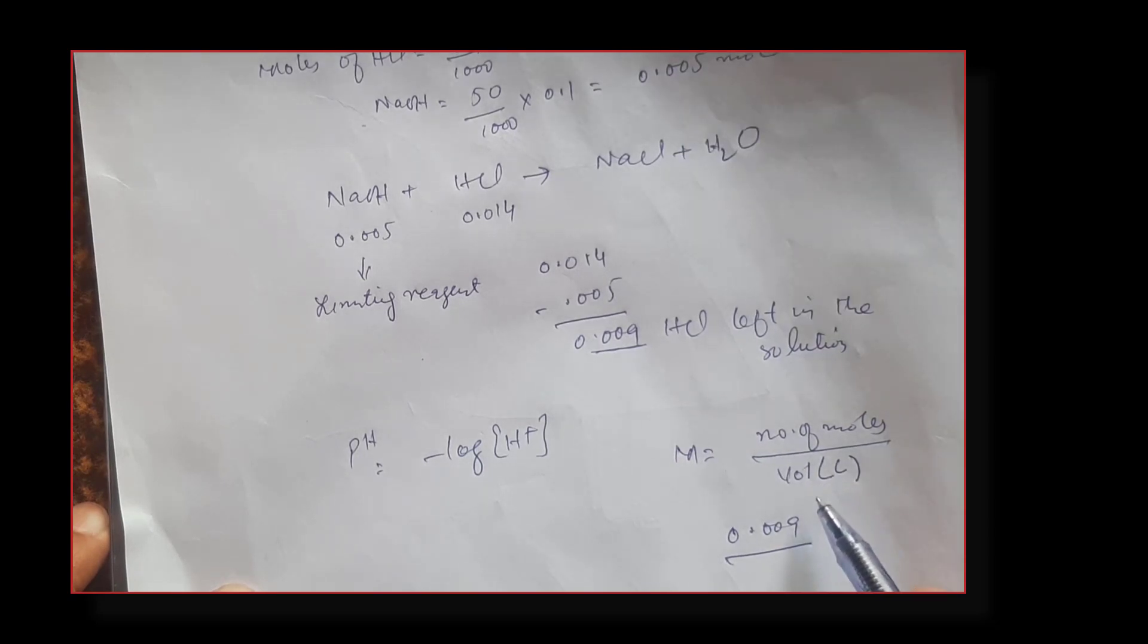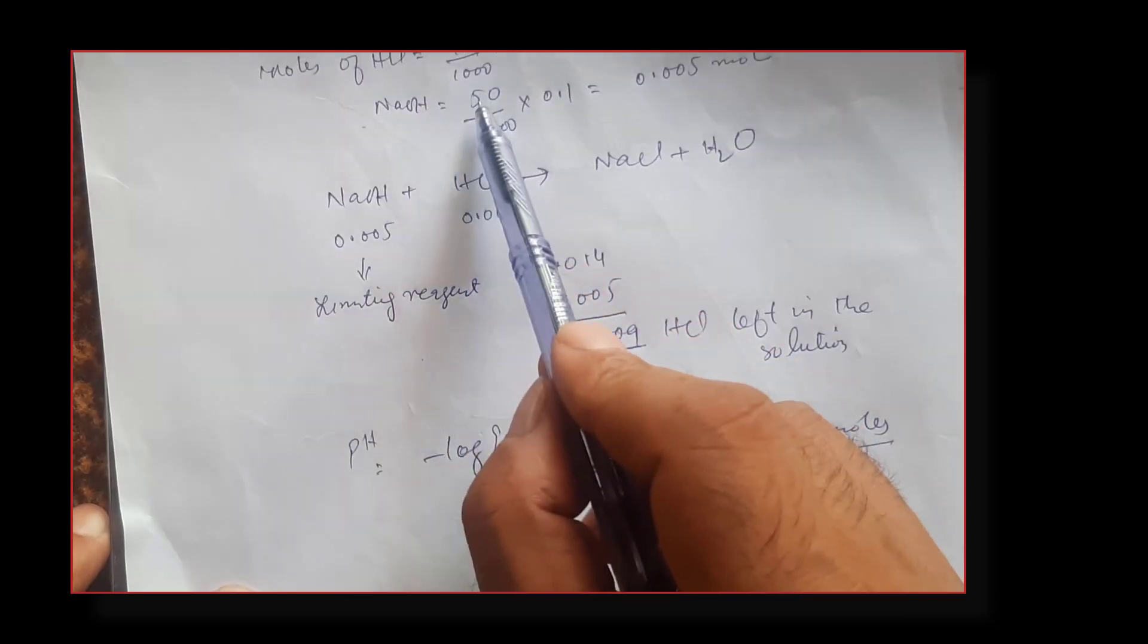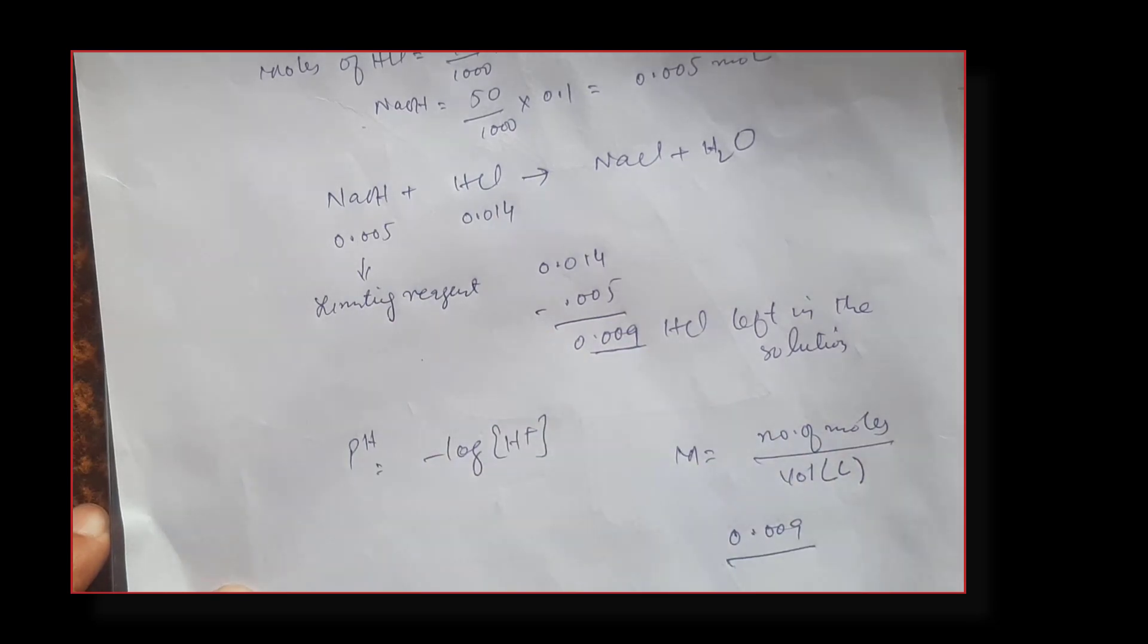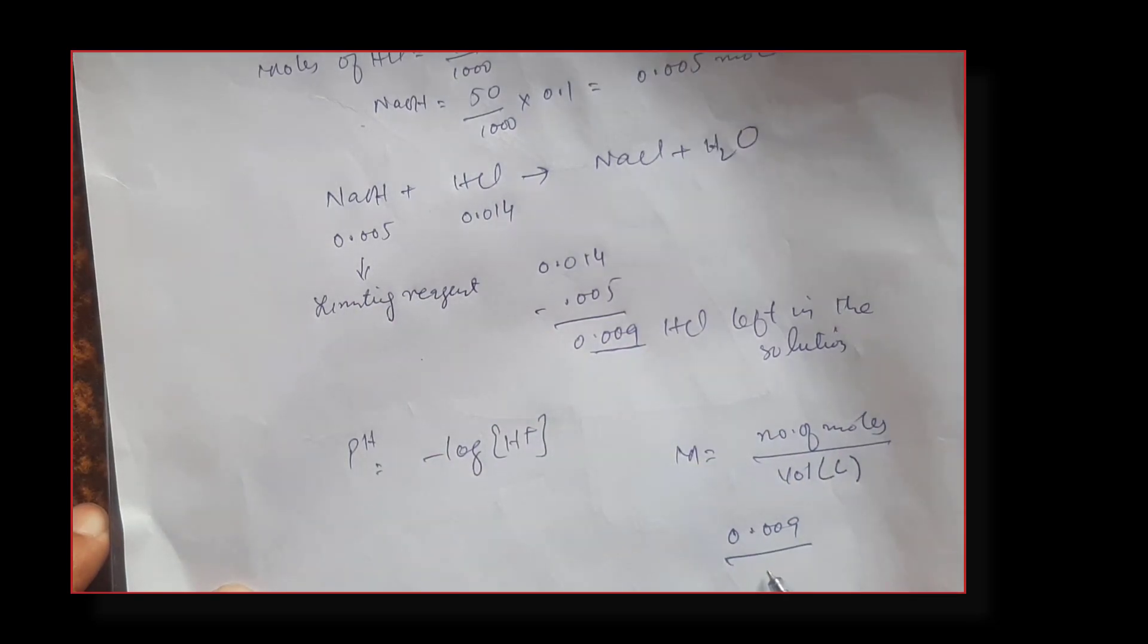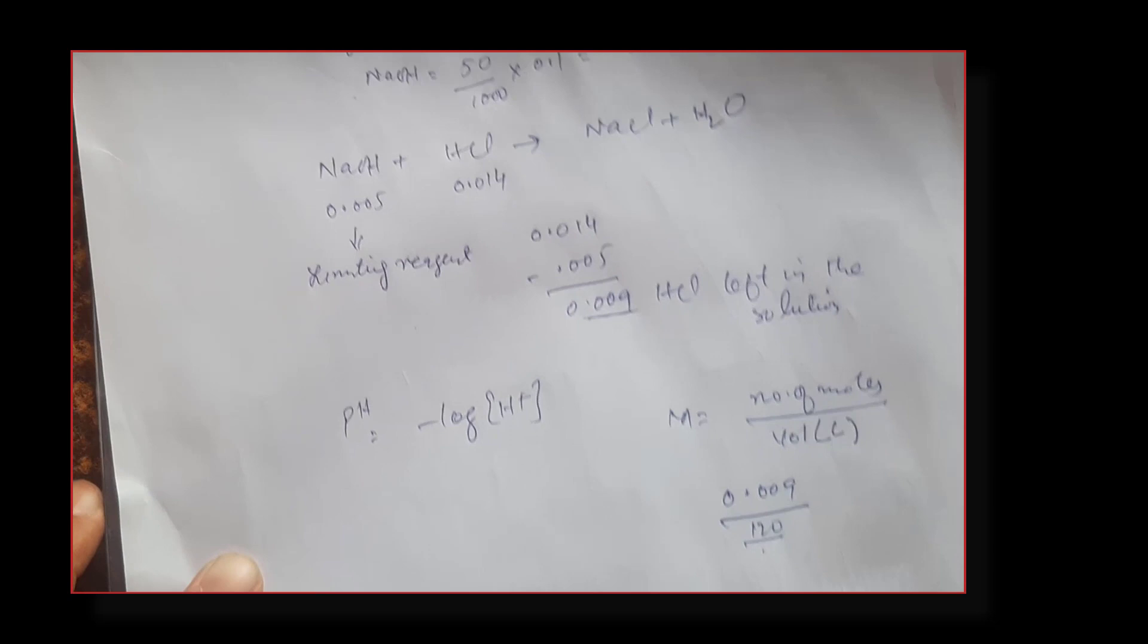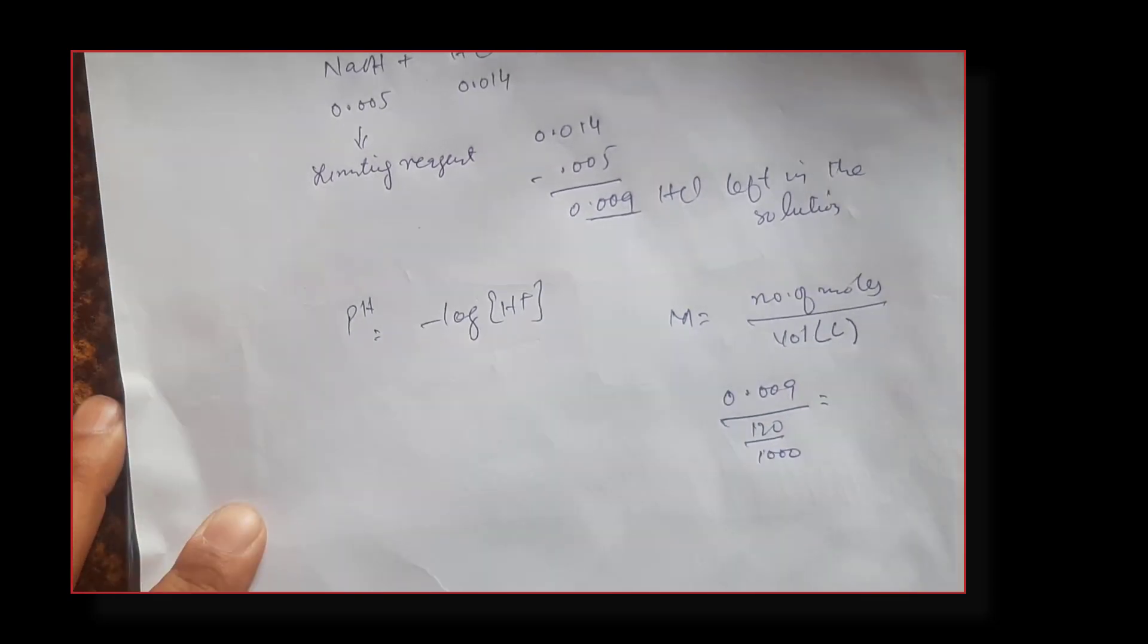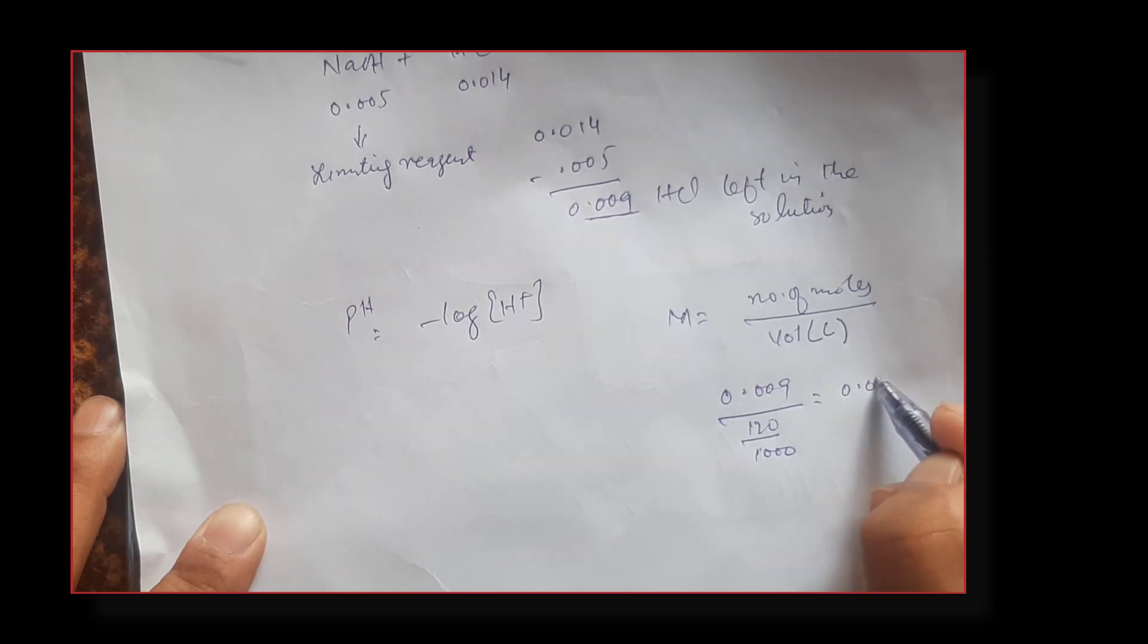The total volume is 70 ml of HCl and 50 ml of sodium hydroxide, which comes to 120 ml. We need this in liters, so 120 divided by 1000. After doing this division, the molarity of HCl comes out to be 0.075.